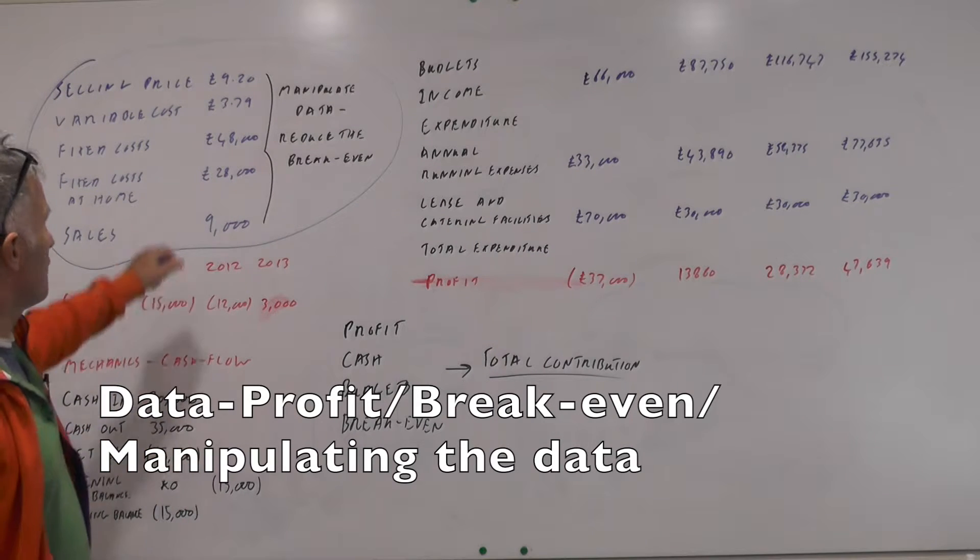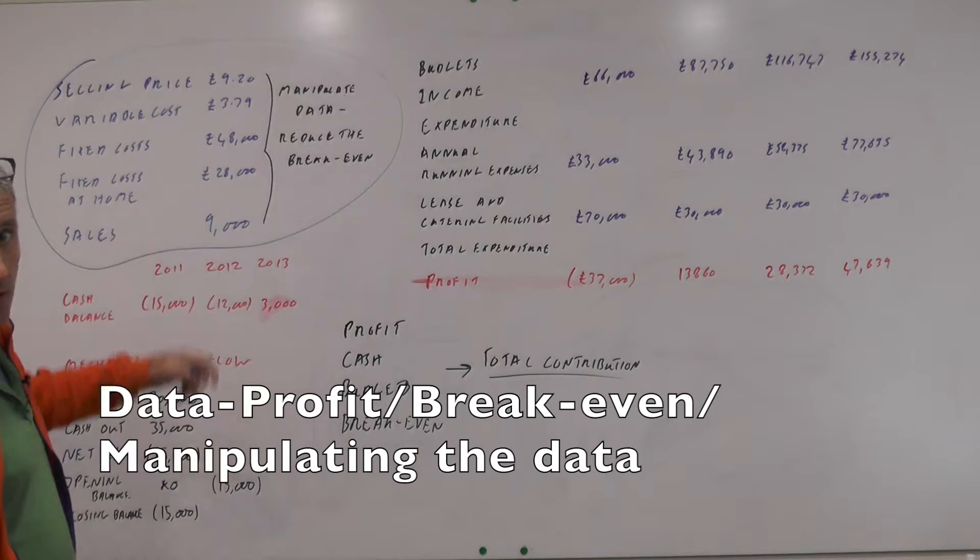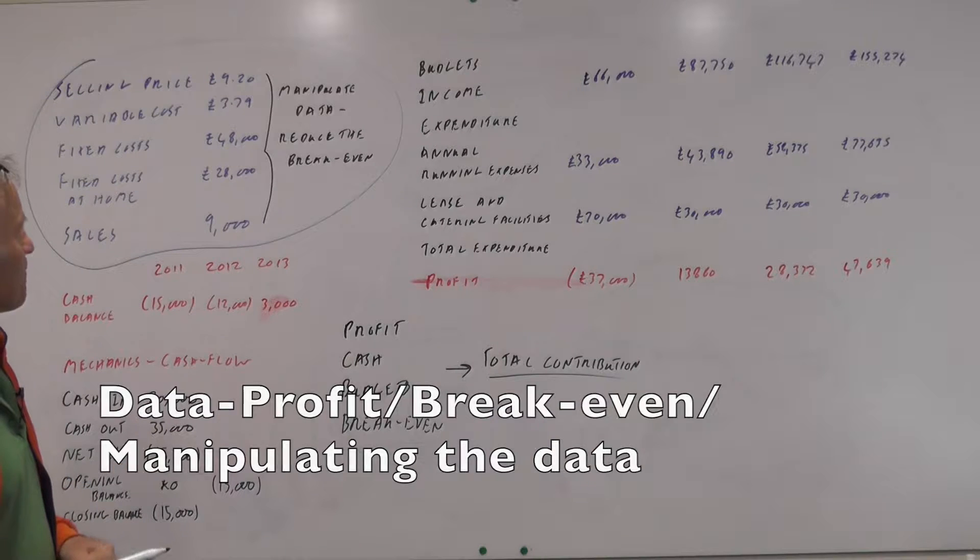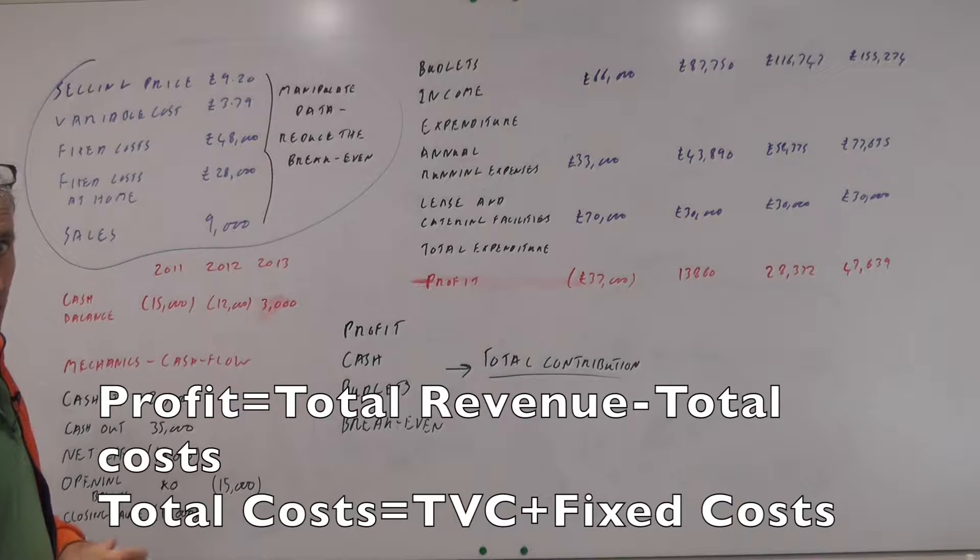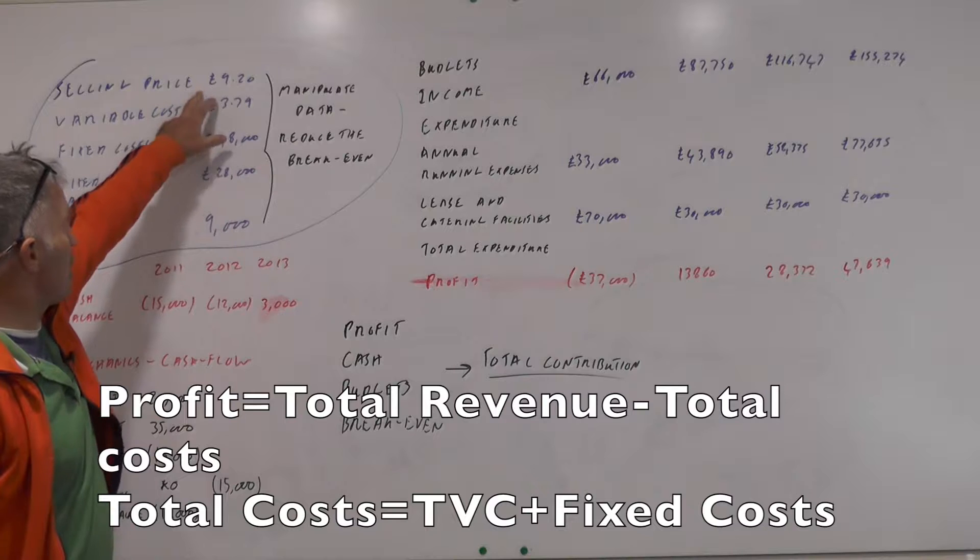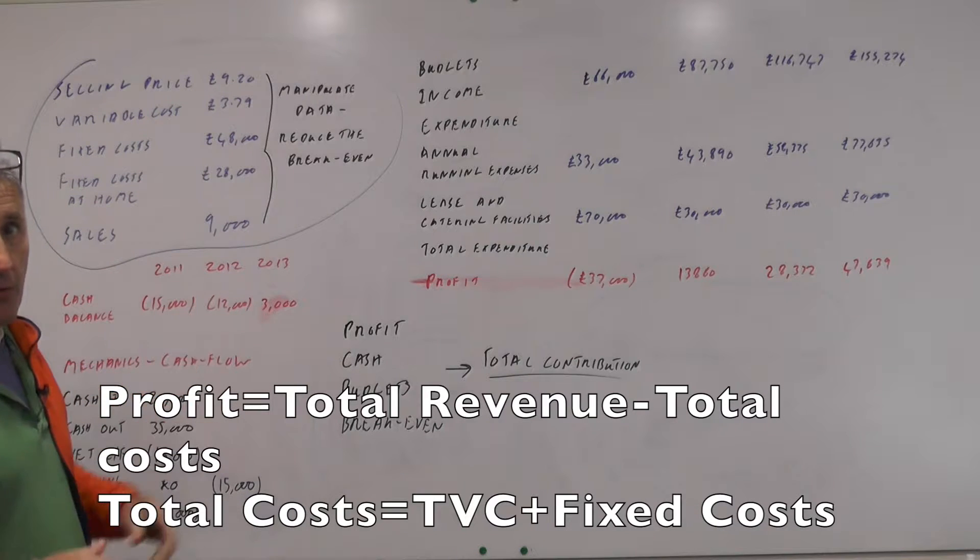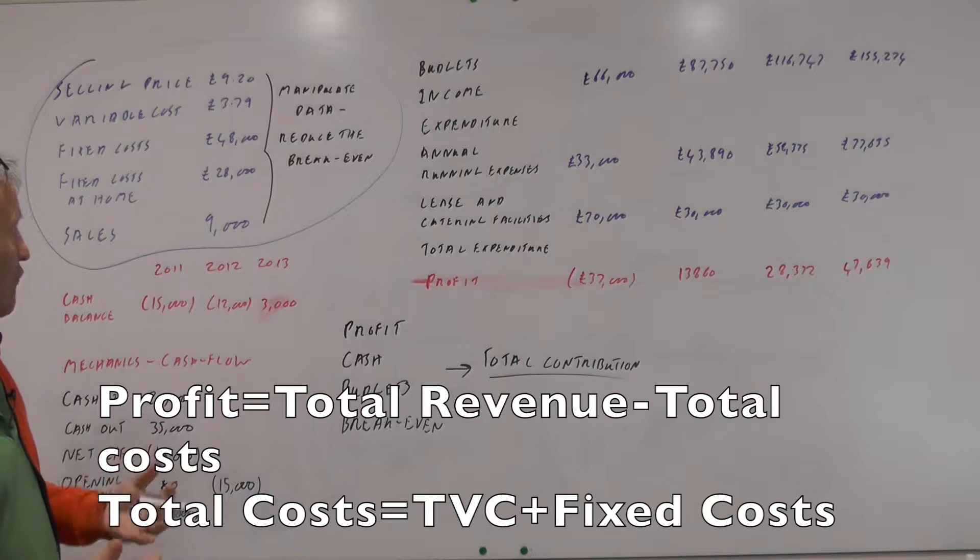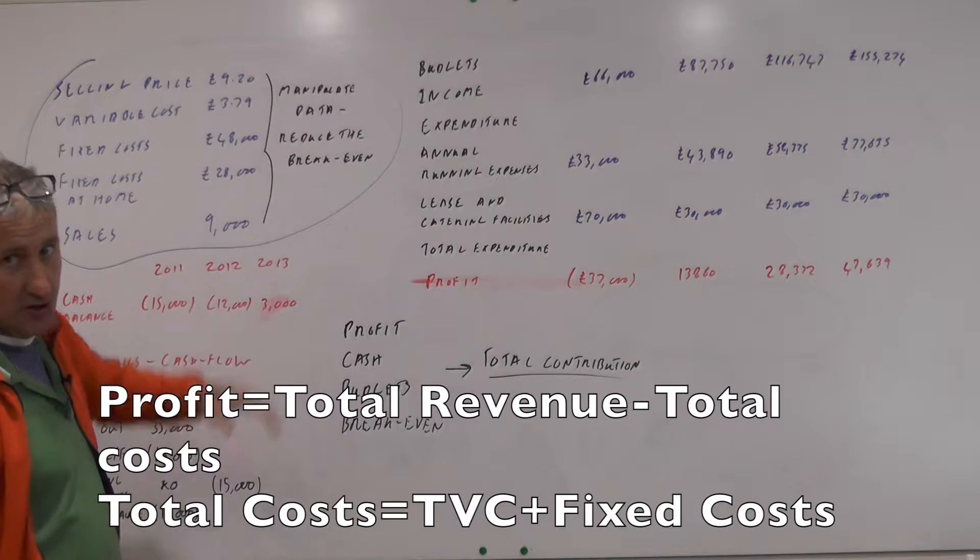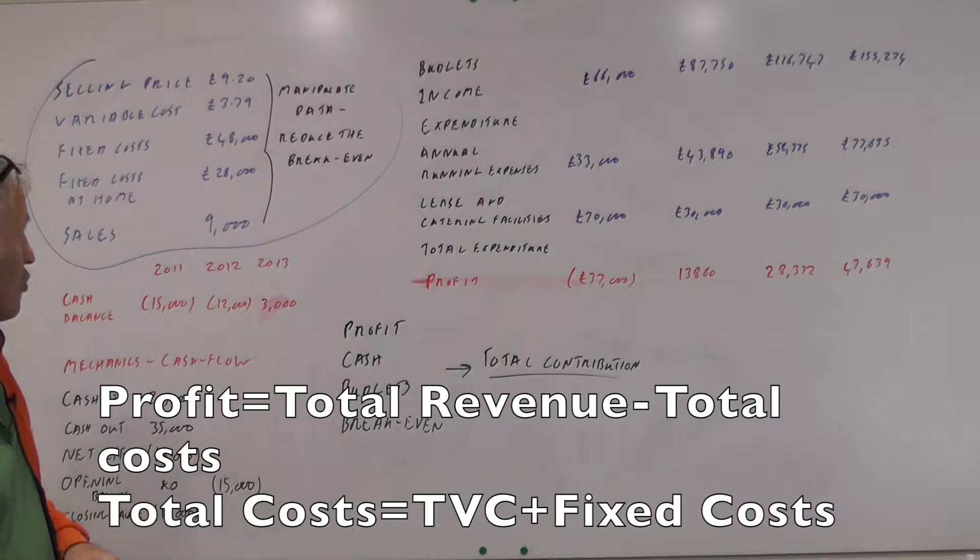Now quickly when you see that you can quickly work out break-even points, profits, you can manipulate the data. You can say well if we can increase the price, if we increase the price by adding more value then the break-even point is going to fall or if we can reduce the variable cost.